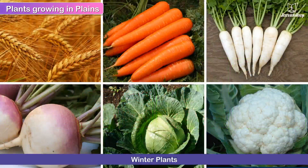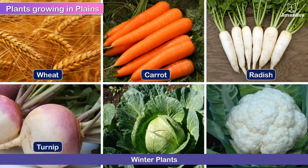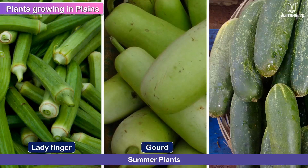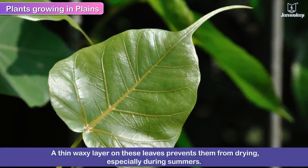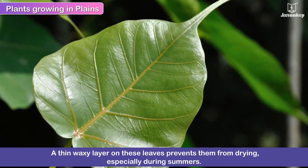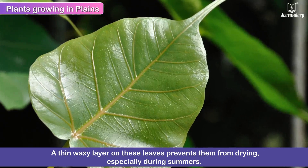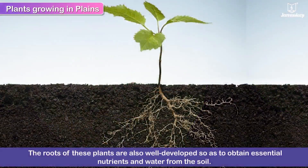Winters are suitable for growing food crops like wheat and vegetable crops like carrot, radish, turnip, cabbage and cauliflower. Lady finger, gourd and cucumber are grown in plains during summers. Terrestrial plants growing in plains have well-arranged leaves to take in necessary sunlight. Also, a thin waxy layer on these leaves prevents them from drying out, especially during summers. The roots of these plants are also well developed so as to obtain essential nutrients and water from the soil.